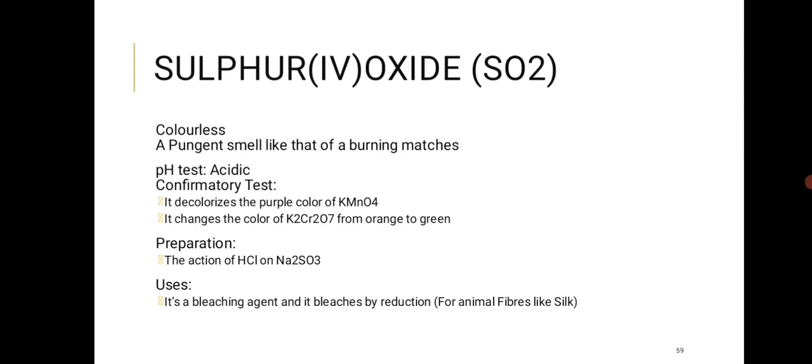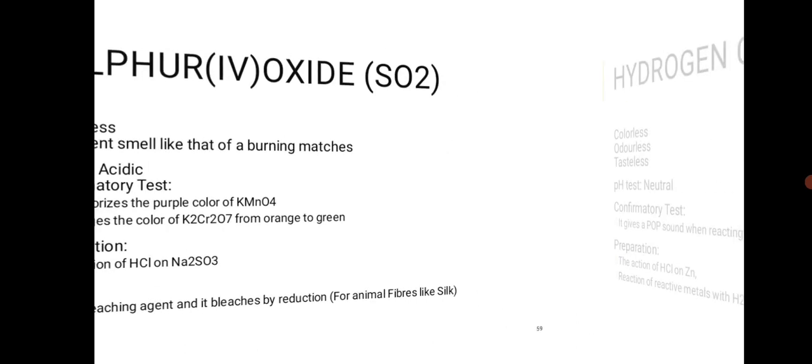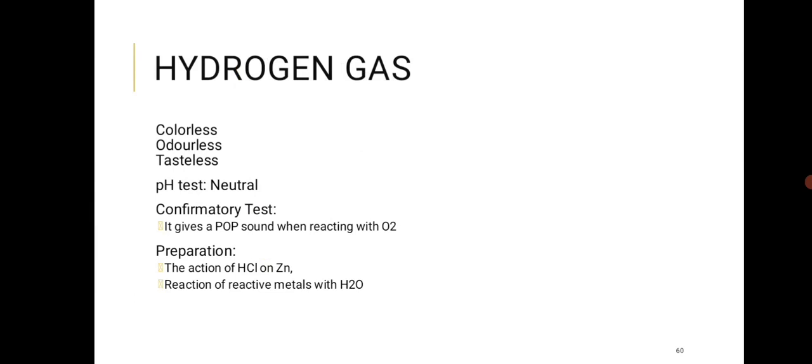SO2 confirmatory test: it decolorizes the purple color of KMnO4 but does NOT deposit yellow sulfur (unlike H2S) — it decolorizes by taking oxygen from KMnO4. Preparation: the action of HCl on Na2SO3. Uses: SO2 is a bleaching agent but bleaches by reduction (unlike Cl2 which bleaches by oxidation). SO2 is used for animal fibers such as silk and wool; CO2 is used for cotton.